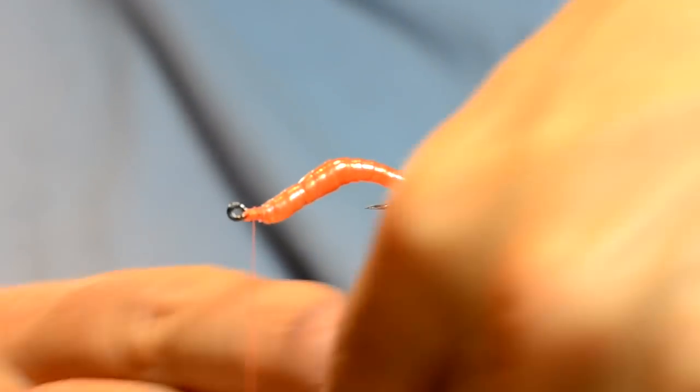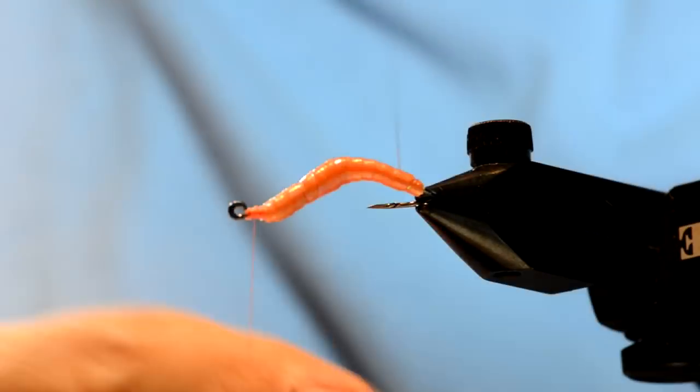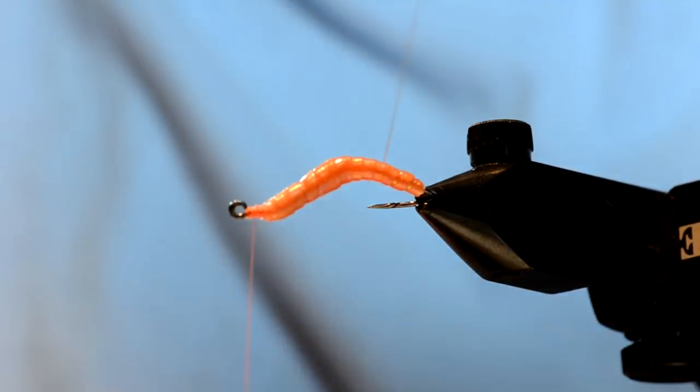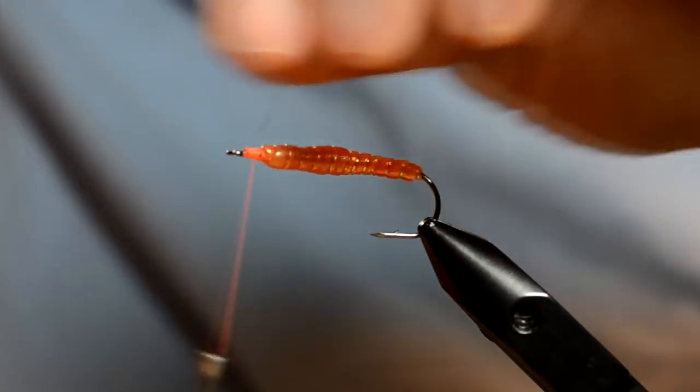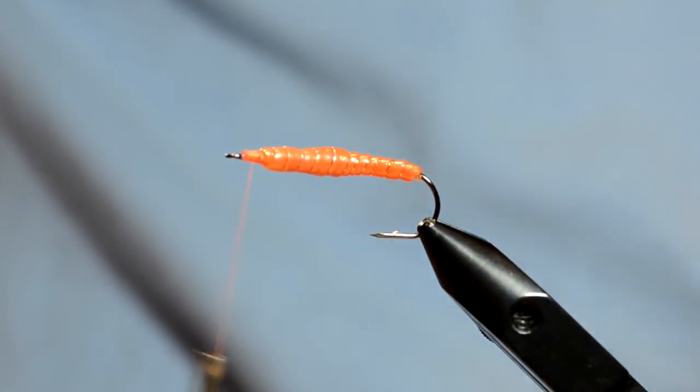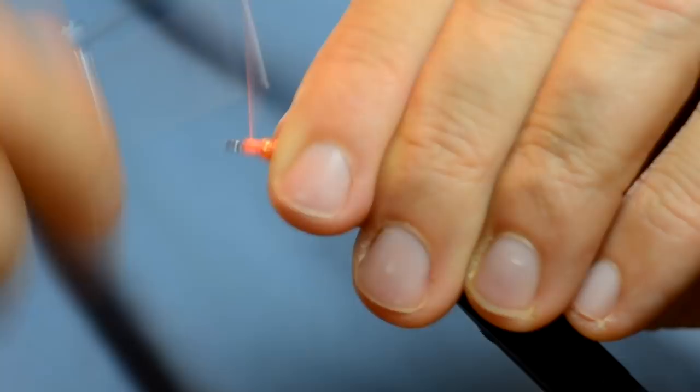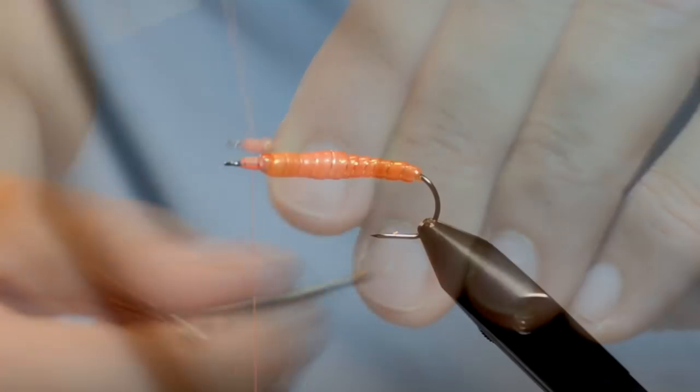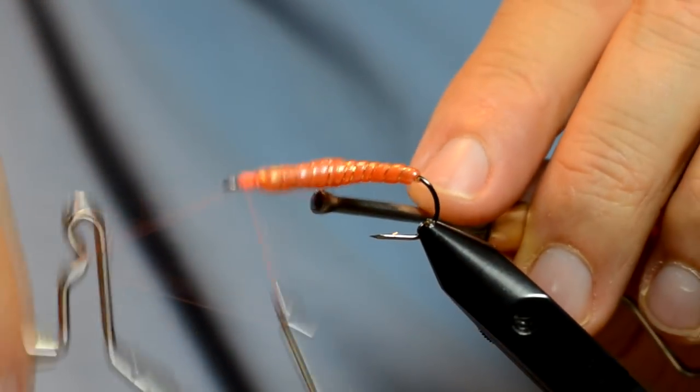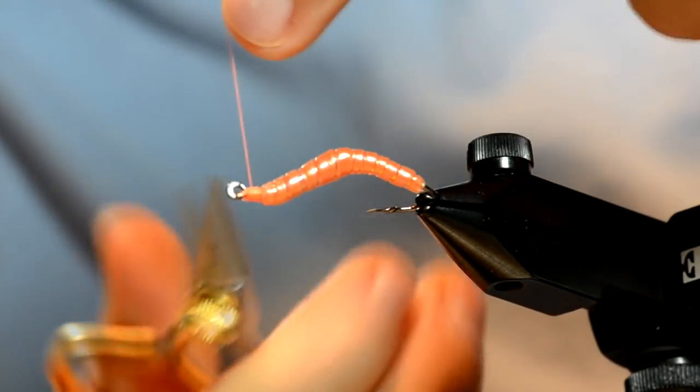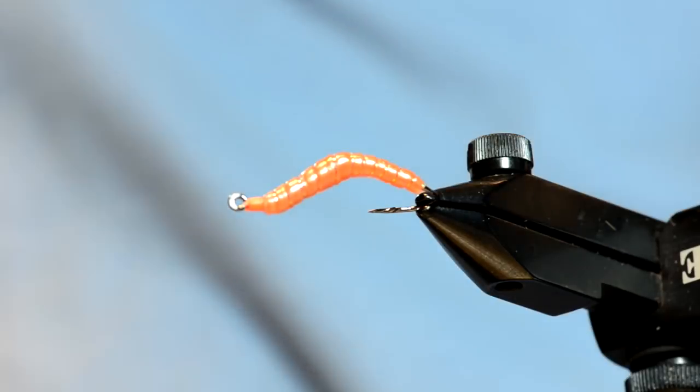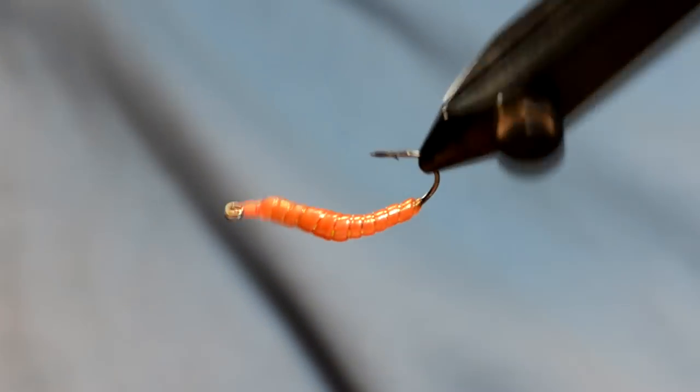Now I'm just going to take my crystal flash and rib the body. I don't want to pull that too tight, but I'm just going to go ahead and rib within each section all the way to the top. Trim off the tag end, clean up the head with finish. And that's it.